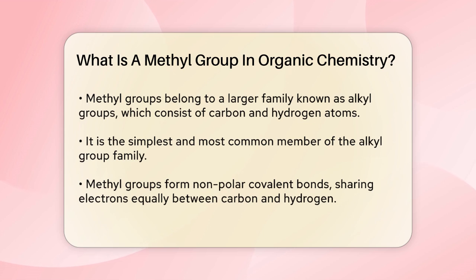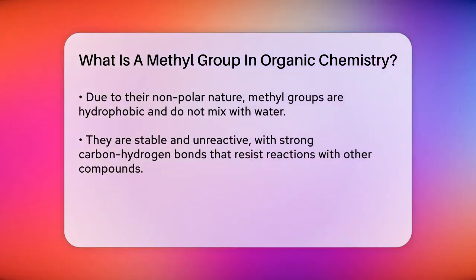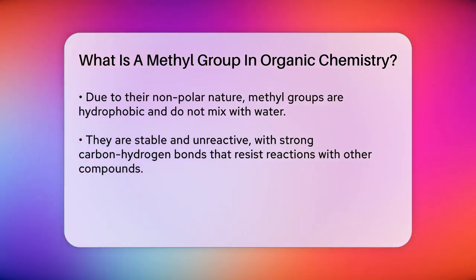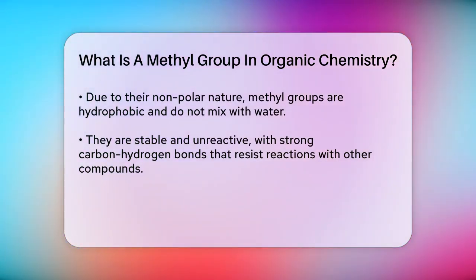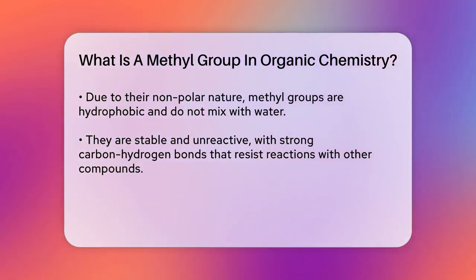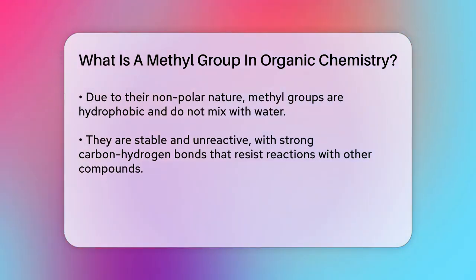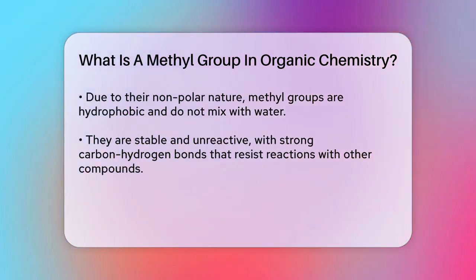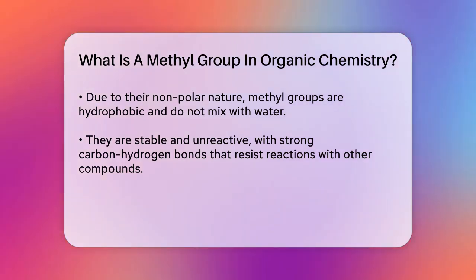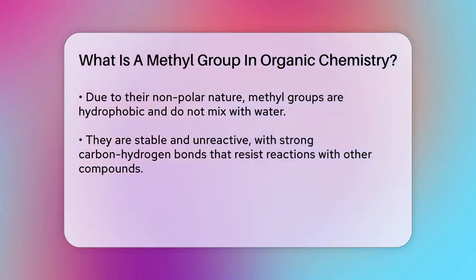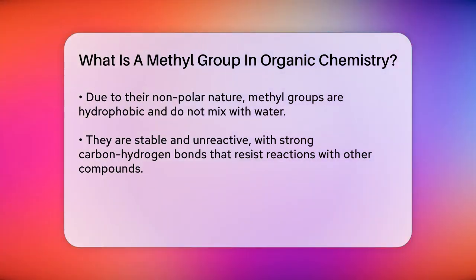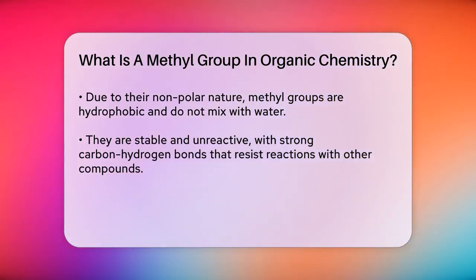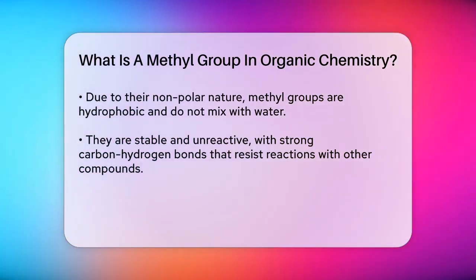Now let's talk about the different forms a methyl group can take. When it's on its own, it can exist as a methyl radical, methyl cation, or methyl anion. The methyl radical has seven valence electrons and is highly reactive, quickly bonding with other molecules to become stable. The methyl cation has six valence electrons and is positively charged, acting as a Lewis acid. The methyl anion has eight valence electrons and is negatively charged, acting as a strong base.